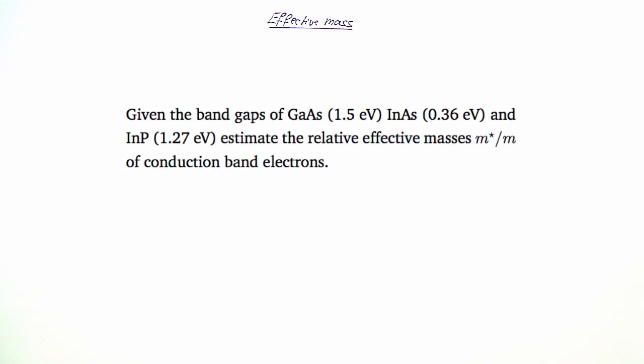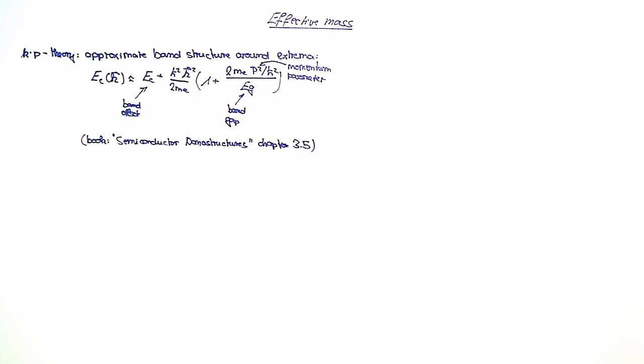In this exercise, we are going to calculate the effective mass of electrons in the conductance band for different semiconducting materials. In order to solve the problem, we are going to use the k.p theory, which is a perturbative solution of the Schrödinger equation. It can be used to approximate the band structure around extrema.